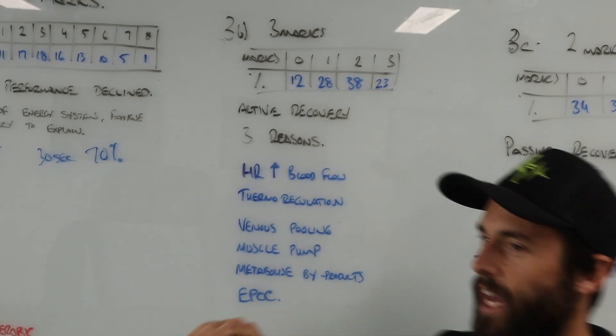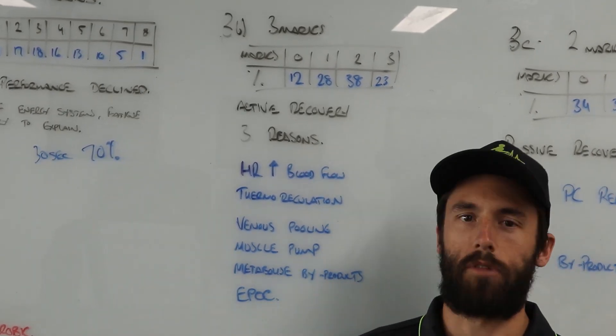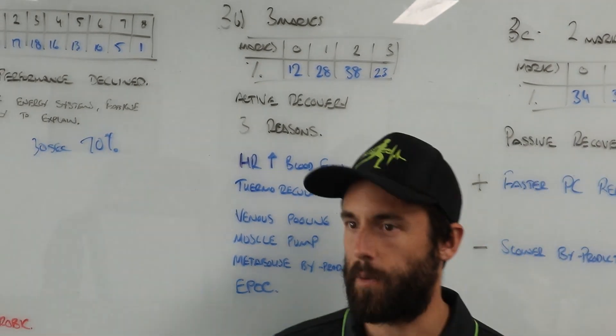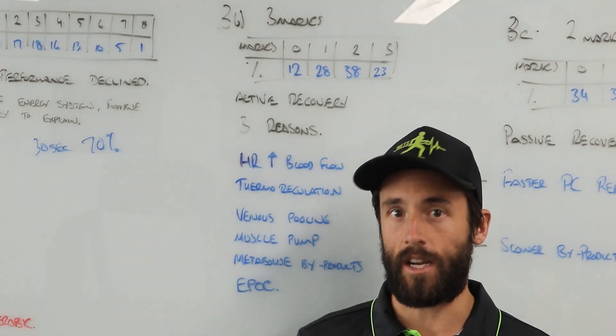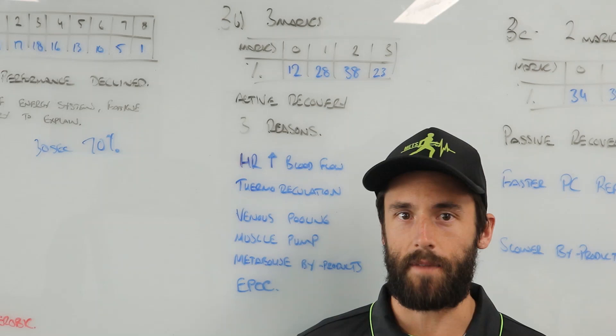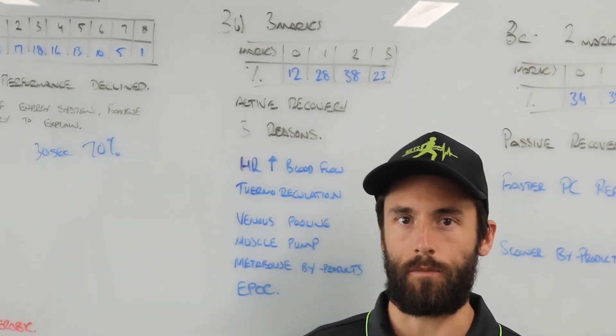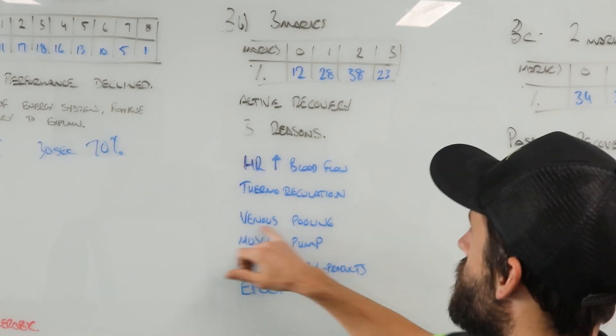We want to talk about the changes in contributions from the ATP-PC system to the anaerobic glycolysis system due to PC depletion and not enough time for full replenishment. We want to talk about the accumulation of metabolic byproducts causing fatigue.